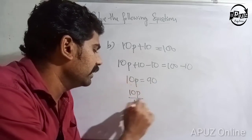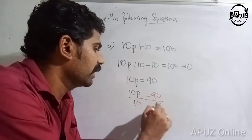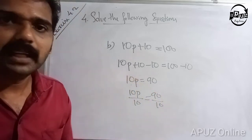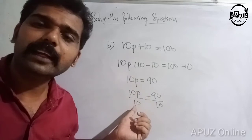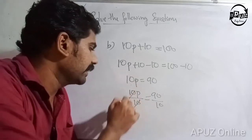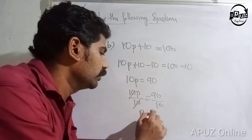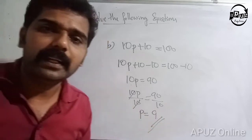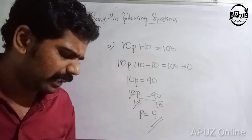10p is equal to 90 divided by 10. Because we divide both sides by 10. So p is equal to 9.